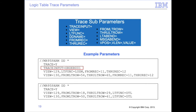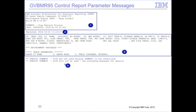One of the most useful trace parameters is the trace input parameter, which allows tracing a specific thread or threads. It uses the thread DD name to restrict output to that thread. The heading section of the GVBMR95 control report provides information about the GVBMR95 environment and execution. It includes: the SAFR executable version information; the system date and time of execution; the GVBMR95 parameters provided for this execution including overall parameters, environment variables, and trace parameters; and ZIP processing status information.